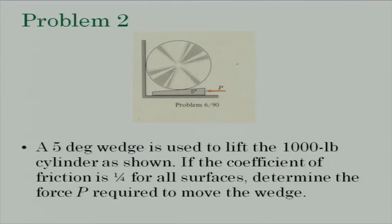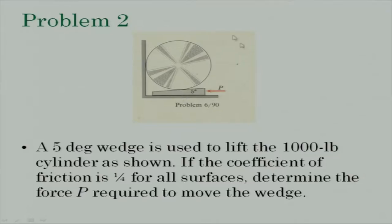Let us move on to the next problem — a little bit of a difficult problem, not too much; some thinking will be required. So what we have here is a wedge problem. I have tried to cover as many different categories as possible. So we have a wedge, we have a cylinder. The wedge angle is 5 degrees, the cylinder is resting on the wedge. The coefficient of friction between all three points of contact is 1/4, and the weight of the cylinder is 1000 pounds while the weight of the wedge is taken to be negligible.